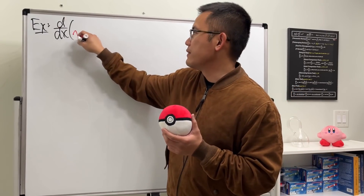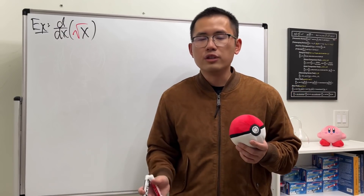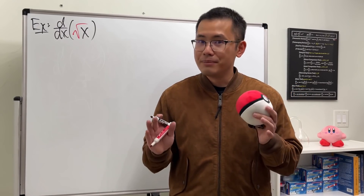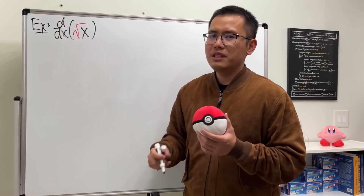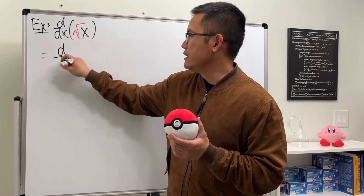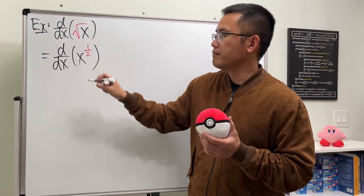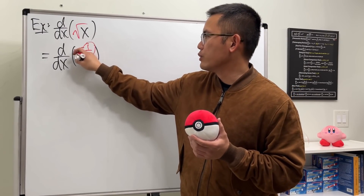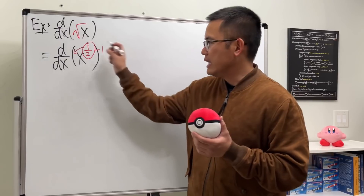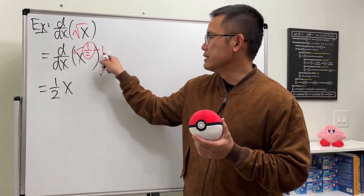Here is an example: how to take the derivative of the square root of x function. We've learned how to use the definition of derivative, but the square root is the same as the one-half power. So let's look at this as taking the derivative of x to the one-over-two power, because then we can just bring the power to the front and minus one — that's the power rule.